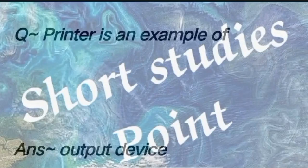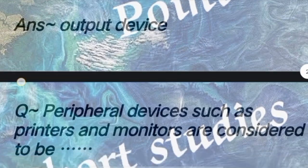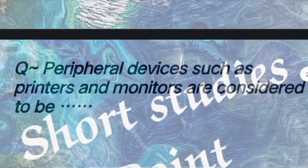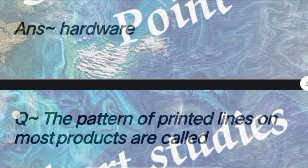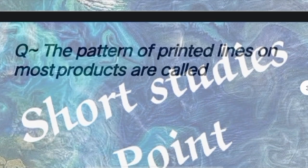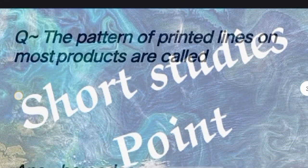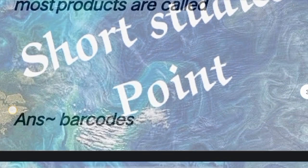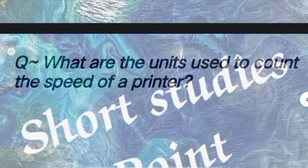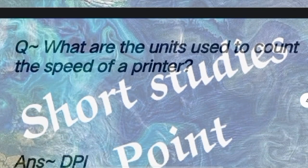Question: Printer is an example of? Answer: Output device. Next question: Peripheral devices such as printer and monitor are considered to be standard hardware. Next question: The pattern of printed lines on most products are called? Answer: Barcodes.